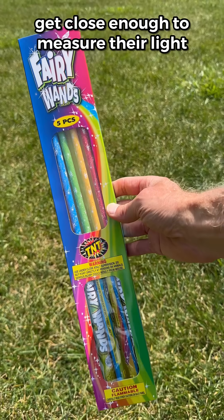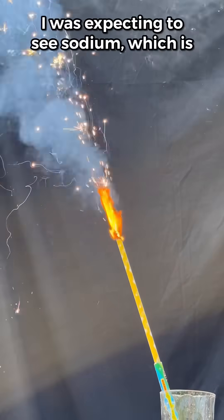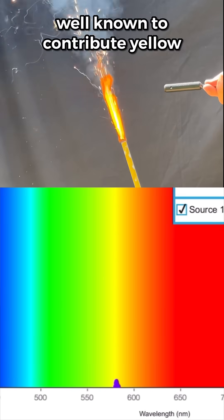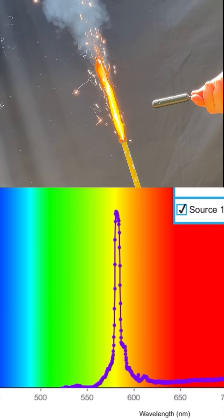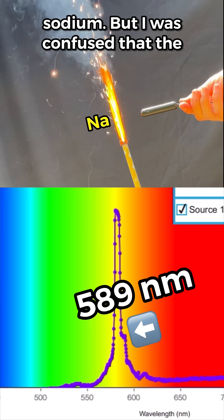I bought these sparklers so I could get close enough to measure their light. I measured the yellow one first. I was expecting to see sodium, which is well known to contribute yellow color to fireworks. Sure enough, the spectrometer showed a small peak at 589 nanometers, confirming sodium.